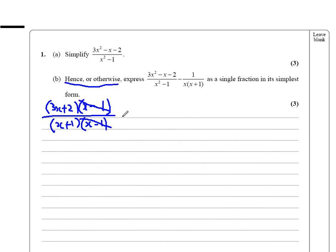So really the question becomes this simplified fraction, take away 1 over x plus 1. Now, we've already got x plus 1 as a common factor here, so we just need to multiply top and bottom here by x. Then everything is over a common denominator.